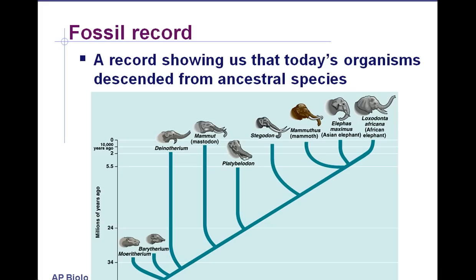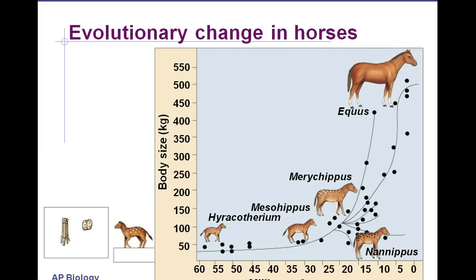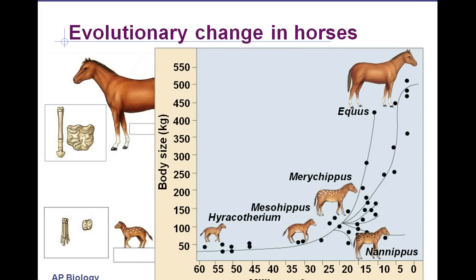Using the fossil record, we can try to piece together how life has changed over time. For example, elephant fossils show a general increase in size over the last 30 million years. We also have fossils of horses that show the same increase in size over time. A larger horse is harder to take down than a smaller one — you can run faster and kick wolves with your back legs. All those things become easier with a larger horse.